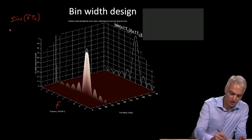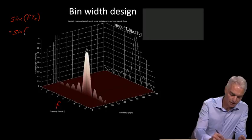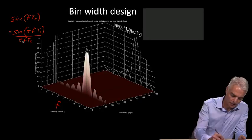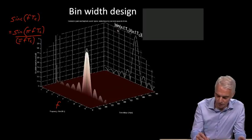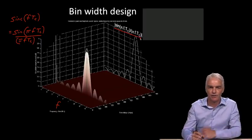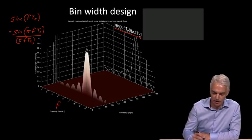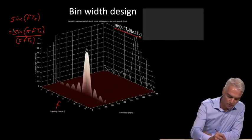What is this normalized sinc function? It's equal to sine of pi times the argument, so pi f Tc over pi f Tc. That's the normalized sinc function, and it's the magnitude of this.